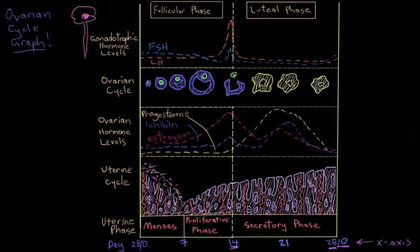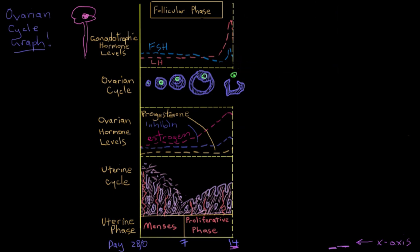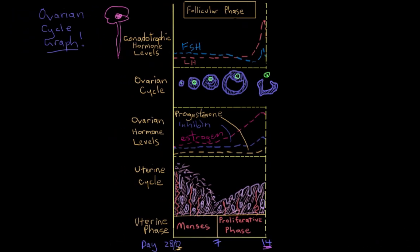For now, we'll just look at the first half of the graph, the follicular phase part of the graph. We won't really worry about the luteal phase part just yet. So on day zero here, the anterior pituitary gland is releasing some FSH and some LH. And you can see those baseline levels here.